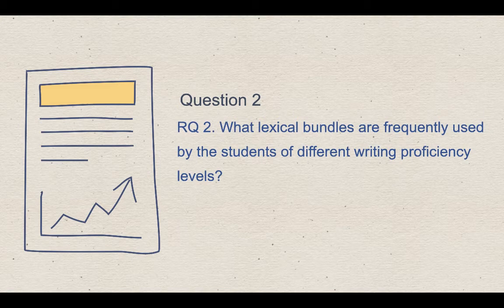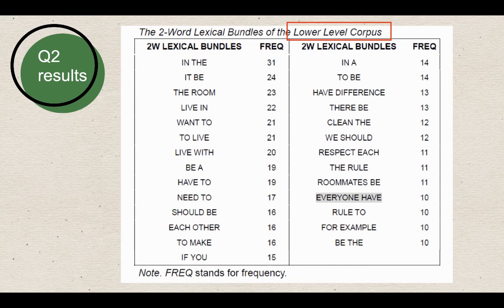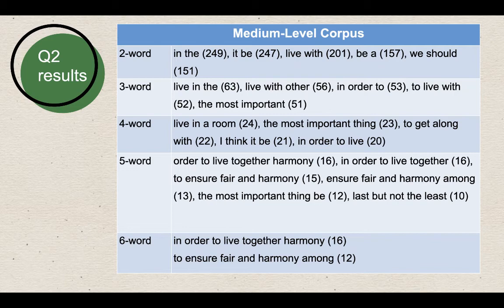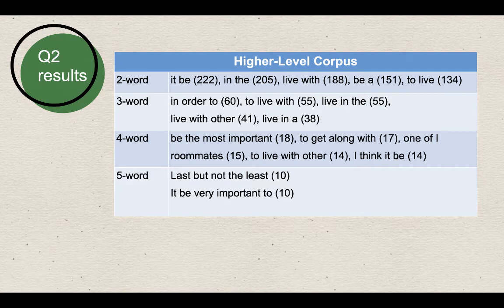For the second question, what Lexical Bundles are frequently used by students of different writing proficiency levels? This slide presents the frequently used bundles. The first table shows two-word Lexical Bundles in the lower-level corpus. The second table reveals highly used Lexical Bundles from two-word to six-word in the median-level corpus. I chose the top five Lexical Bundles for each word string.